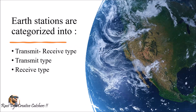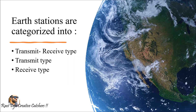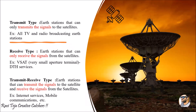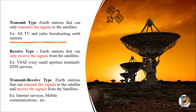The receiver type earth station only receives signals — for example, receiving a news feed from a satellite and delivering it to subscribers. The third and most important type is the transmit-receive type, which can both transmit and receive signals using a single earth station. This type is used when we expect an acknowledgement, answer, or result — the best examples being internet services and mobile communications.